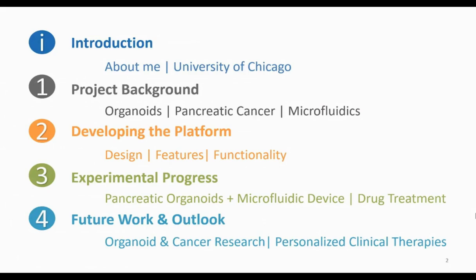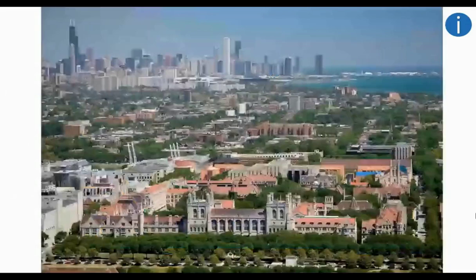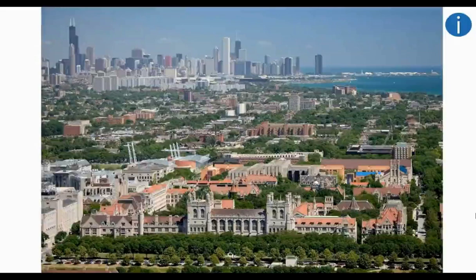Located in the United States in the heart of the Midwest, Chicago, Illinois is the third largest city in terms of population in the country and is home to many wonderful universities, including the University of Chicago, which is just south of the downtown area — or what we call the Loop — in a Chicago neighborhood called Hyde Park.